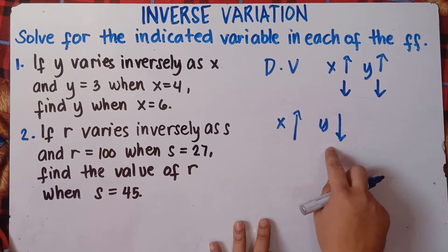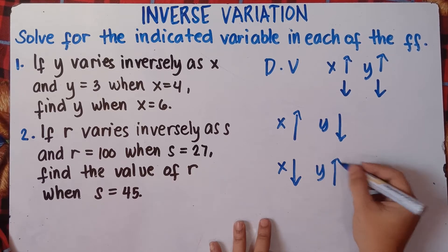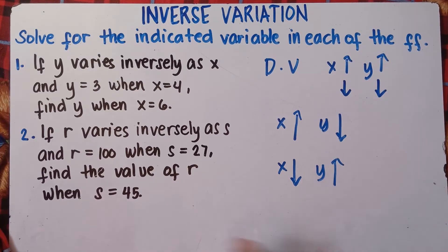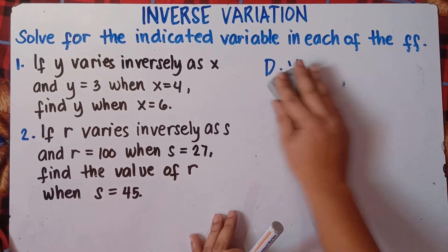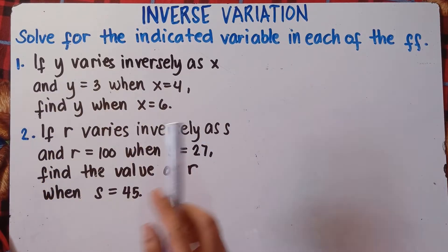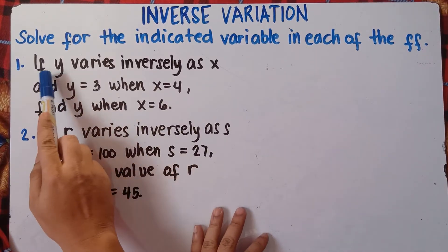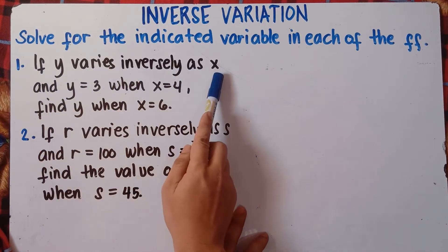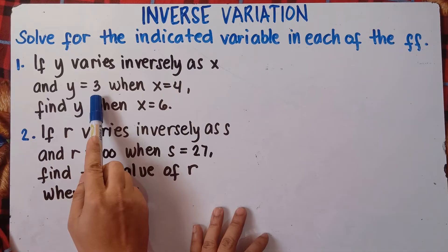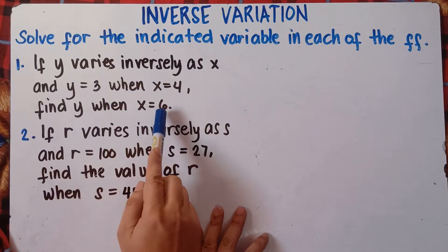If your x increases, your y decreases. And if your x decreases, your y will be increasing — opposite direction. So just remember that. Based on Example 1: if y varies inversely as x and y equals 3 when x equals 4, find y when x equals 6.